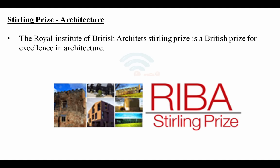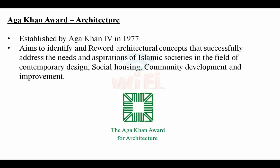The Stirling Prize is a British prize for excellence in architecture given by the Royal Institute of British Architecture. The Aga Khan Award for Architecture was established by Aga Khan IV in 1977 and is given to Islamic societies or individuals for their contribution to contemporary design, social housing, community development, and improvement. These are all the important international and national awards for your exam.